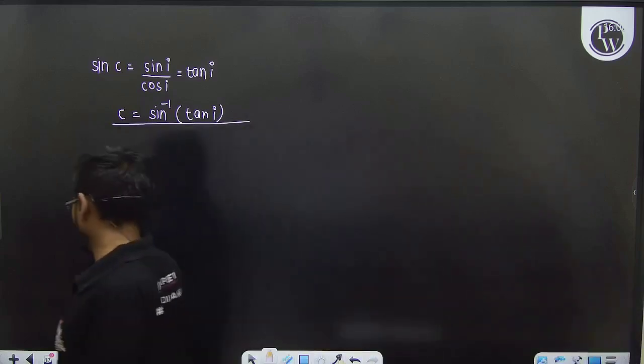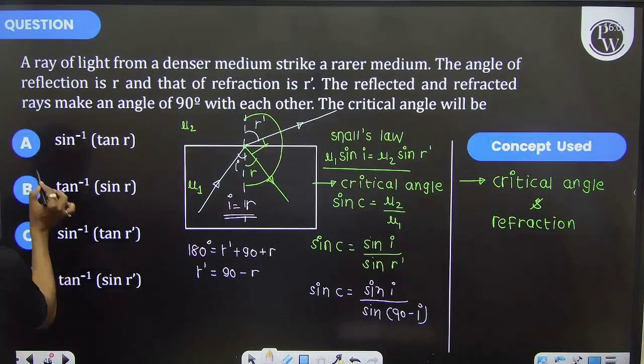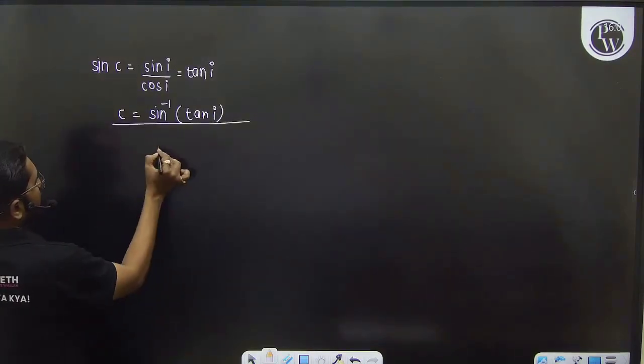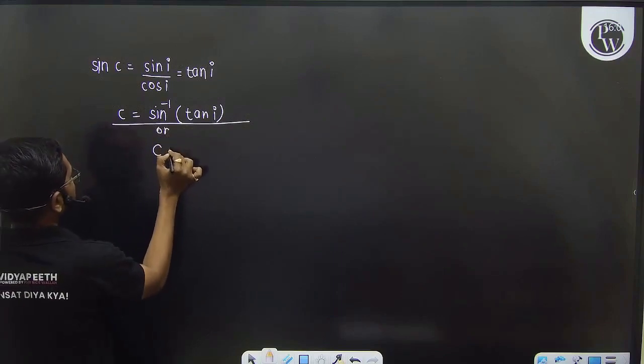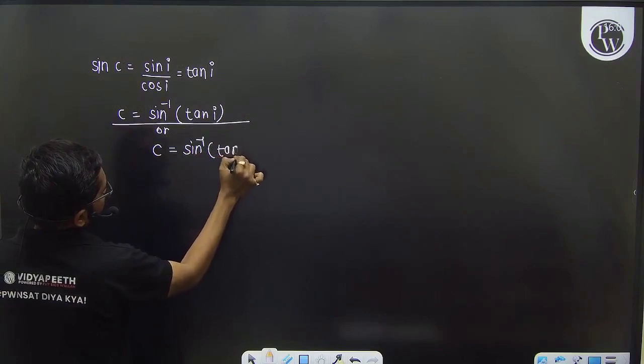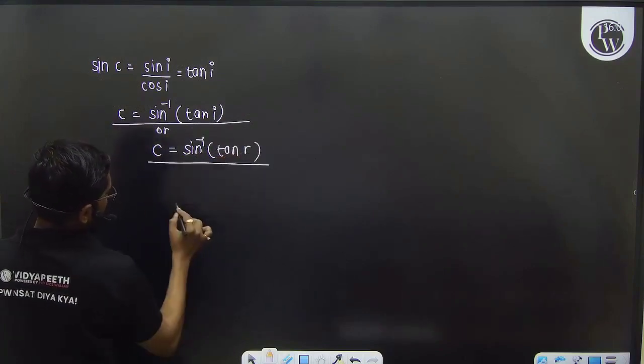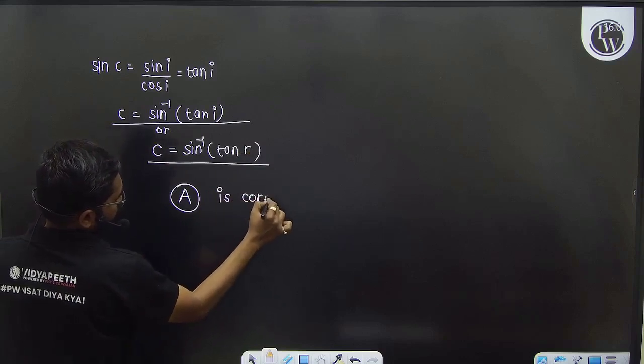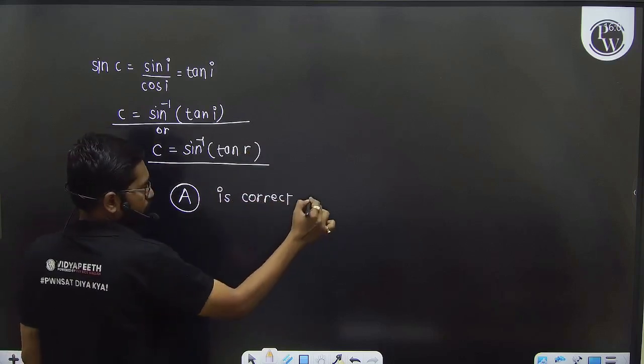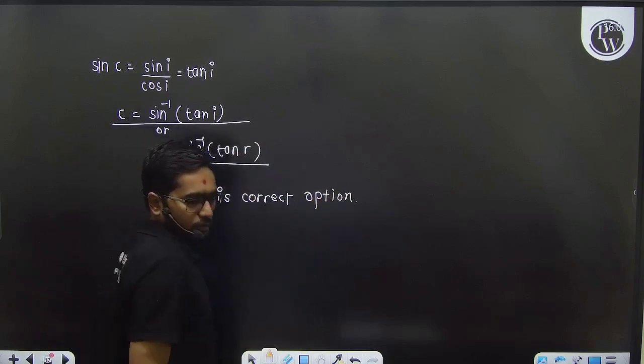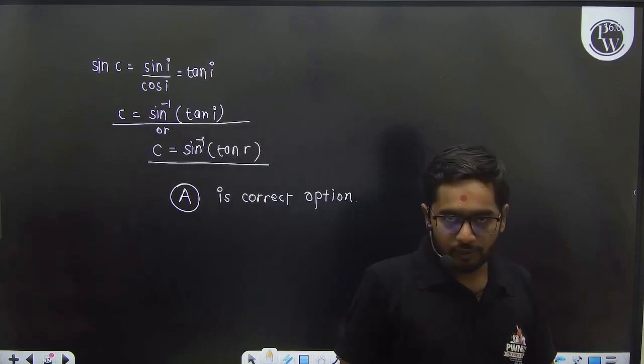This is the correct choice. If we match the options, this will be option A. You can also write it as sin inverse of tan r because both are the same angle. So A is the correct option. Hope you understand.